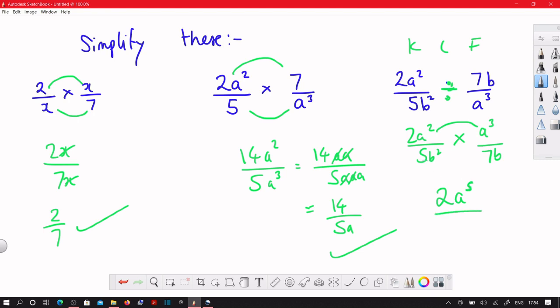On the bottom, 5 times 7 is 35. You've got b² times b. Remember, if the base is the same, which it is, both are b's, then you add the indices. 2 add 1 is 3. So that would be b to the power of 3.